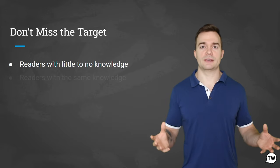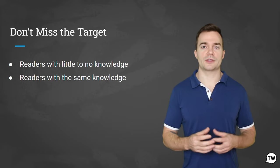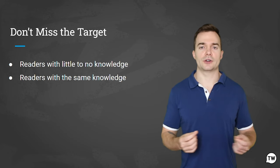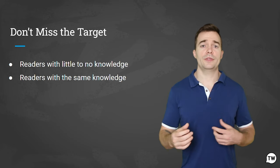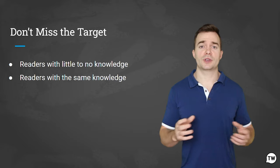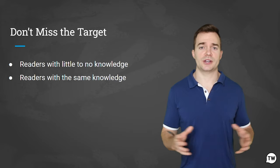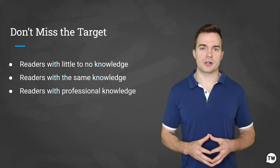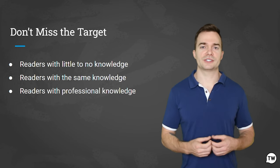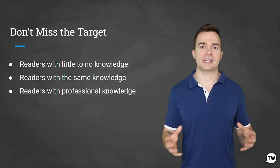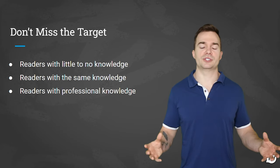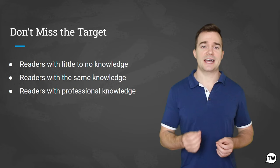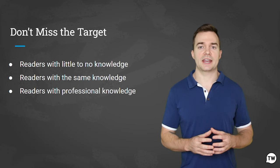Then we have readers with the same knowledge. If the work is written for other professionals in the field, it's safe to use the same jargon, terminology, and underlying concepts. With this audience, how to communicate concepts is typically less urgent than understanding why. And then we have readers with professional knowledge — technical writers sometimes write research or instructions aimed at readers who know more about the subject than they do. When writing to an expert audience, it's key not to add unnecessary information and explanation.